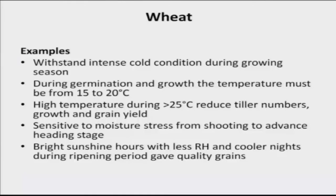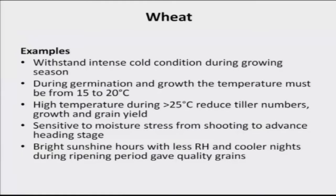Coming to the wheat crop, it is being grown in all countries of the world. Wheat can withstand intense cold conditions during the growing season and is able to tolerate cold, but does not tolerate heat. During germination and growth, the temperature must be from 15 to 20 degrees centigrade, as we studied in cardinal temperature discussions. High temperature greater than 25 degrees centigrade reduces tiller numbers, growth, and grain yield — especially during the vegetative stage, temperatures above 25 degrees centigrade must affect wheat yield.